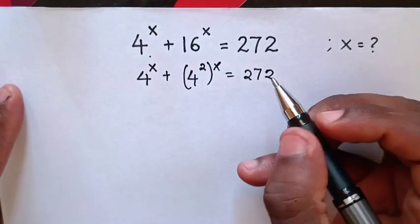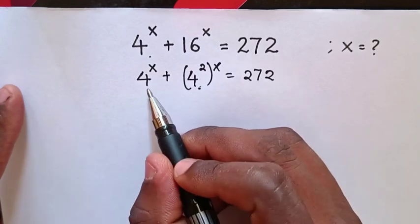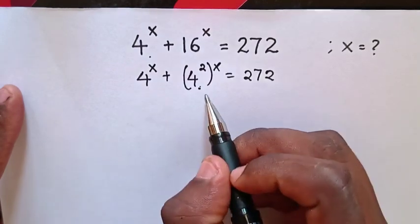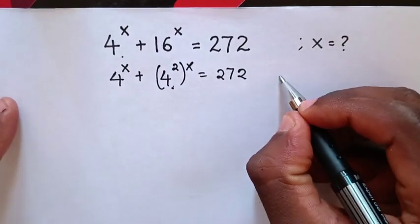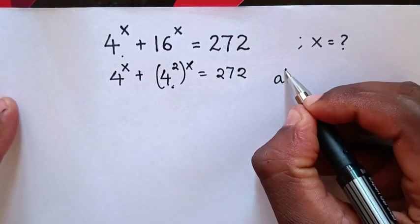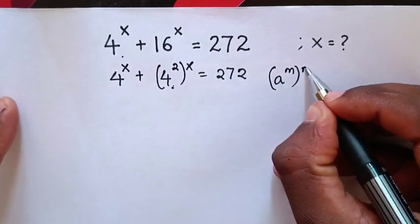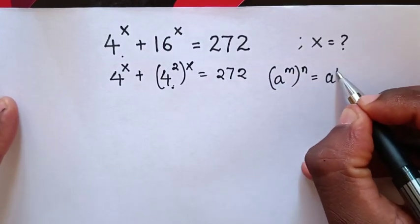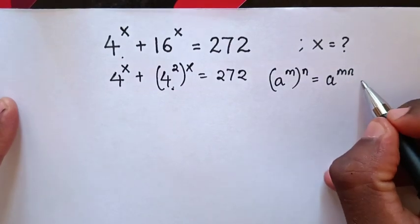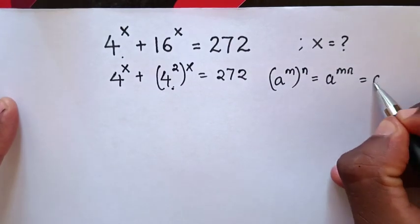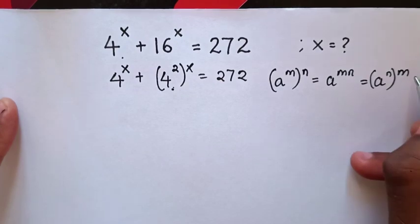Now from here, we will apply the exponential rule: a power m, bracket power n, is equal to a power m times n. We will exchange the powers inside the bracket.